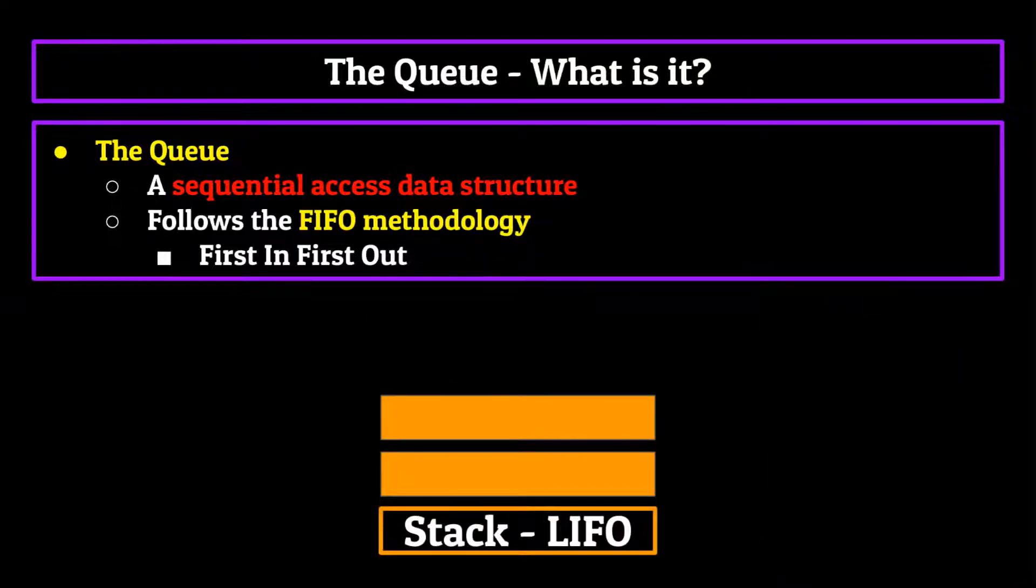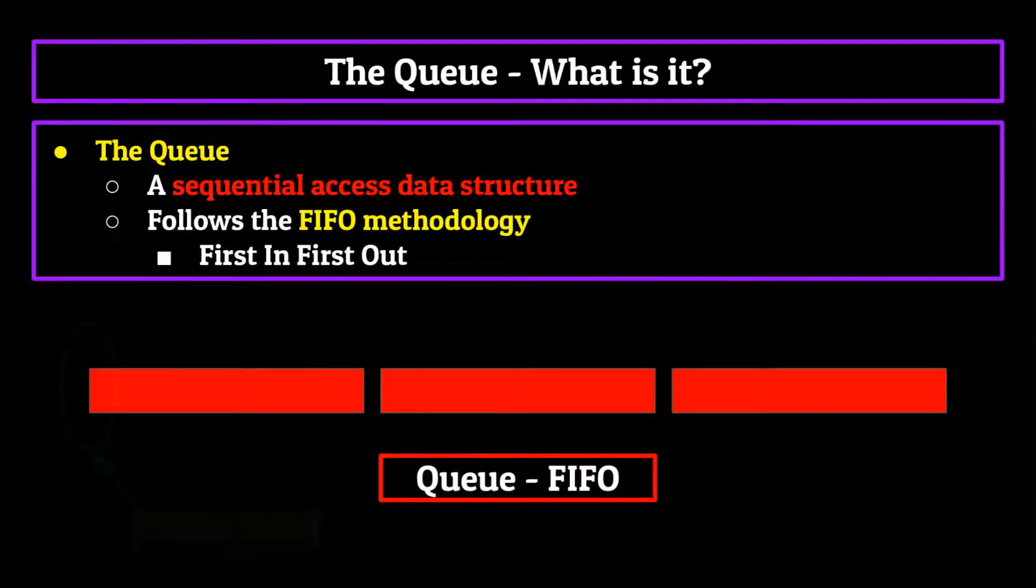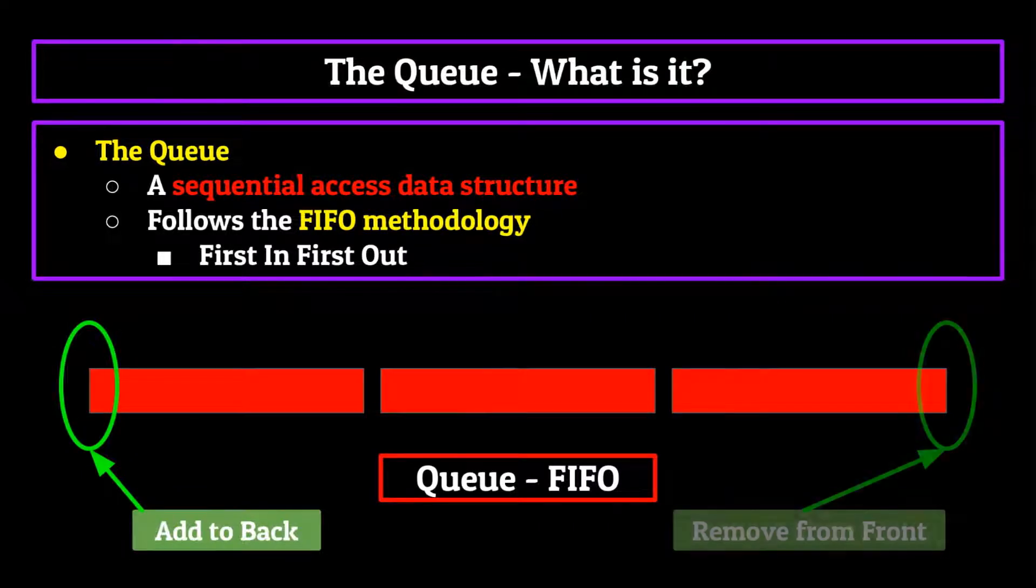Another big difference between stacks and queues is the location we add and remove elements from. You might remember that with the stack, we added and removed elements from one spot, the top. With the queue, though, this is different. We add elements to the back, and we remove them from the front. And if you think about it, this makes complete sense.